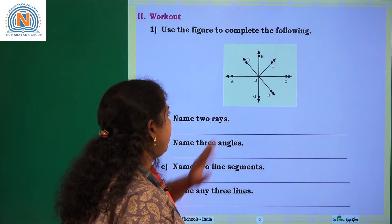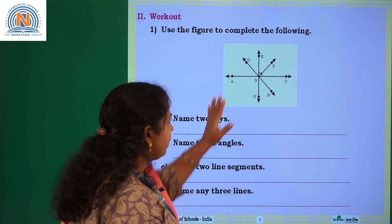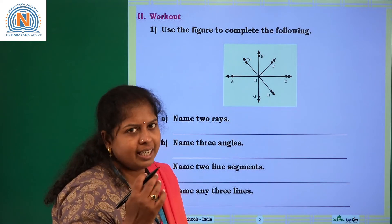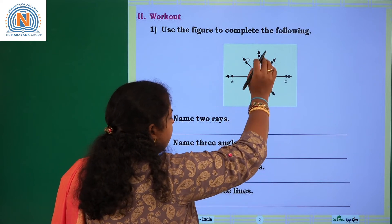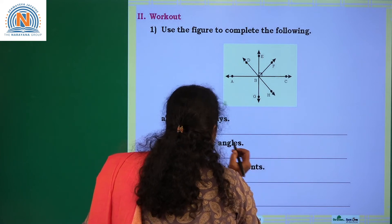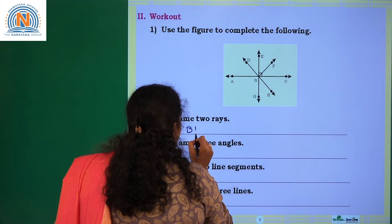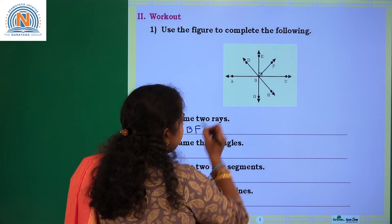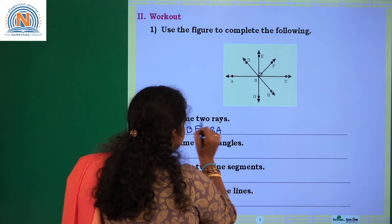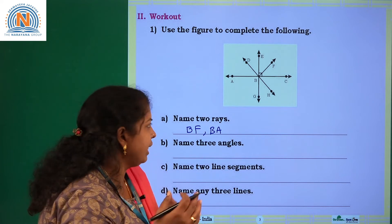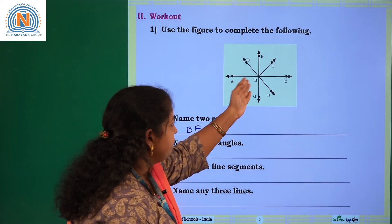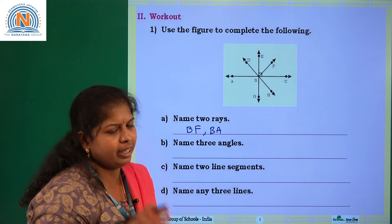Use the figure to complete the following. Name two rays — a ray has one initial point and extends endlessly on the other side. If you observe the figure, BF is a ray and BA is another ray. You can also take BD, BE, BG, or BH — any two of your choice.